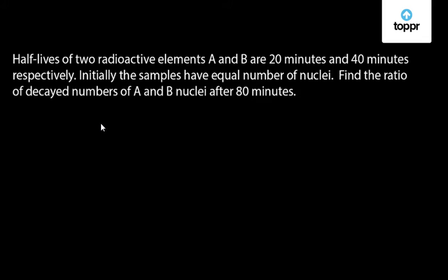Let us discuss a question on nuclear physics which came in JEE Mains 2016. Here's the question: Half lives of two radioactive elements A and B are 20 minutes and 40 minutes respectively. Initially, the samples have equal number of nuclei. Find the ratio of decayed number of A and B nuclei after 80 minutes.